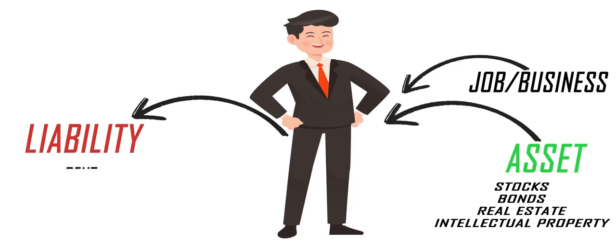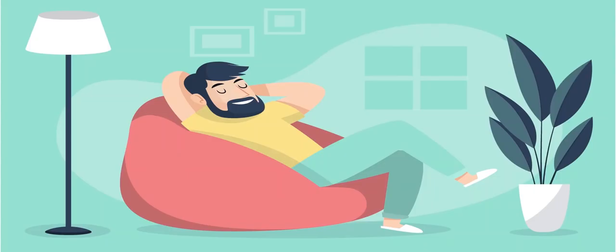Liabilities include monthly expenses like rent, groceries, and any luxury spending. Once your asset income reaches high enough to replace your job, you are not required to work anymore, money works for you.